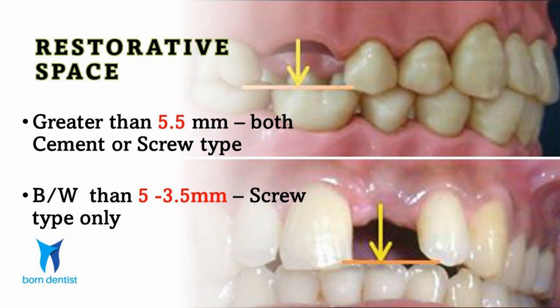The option is yours. If the space is between 3.5 mm and 5 mm, then only a screw type restoration is possible. Anything less than 3.5 mm means that case is not ideal for implant rehabilitation. In such situations, you need to find more vertical space by modifying the occlusal plane if feasible, or place the implant deeper inside the bone to facilitate more restorative space.